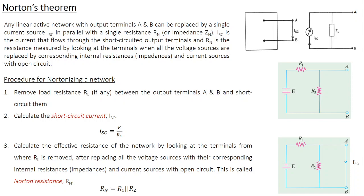Open circuit means infinite resistance. So in Thevenin's theorem a network is reduced into a voltage source with a series resistance, whereas here a given network is converted into a current source with a parallel resistance.